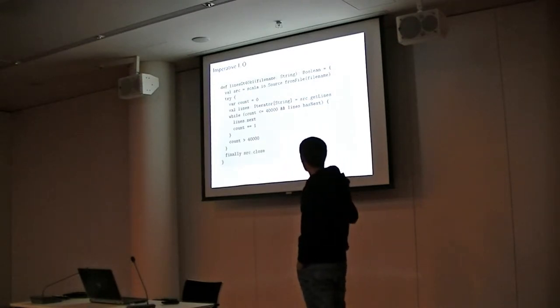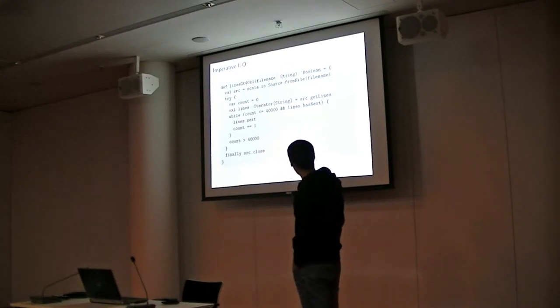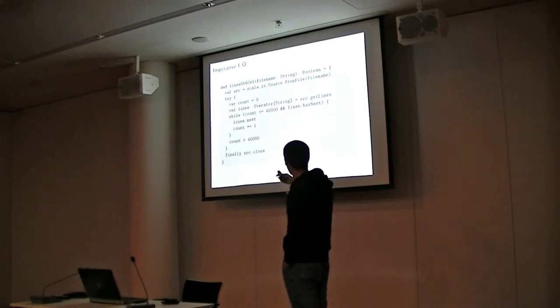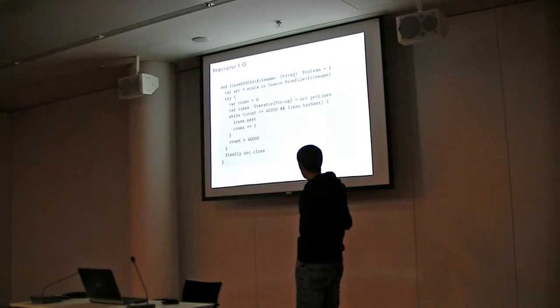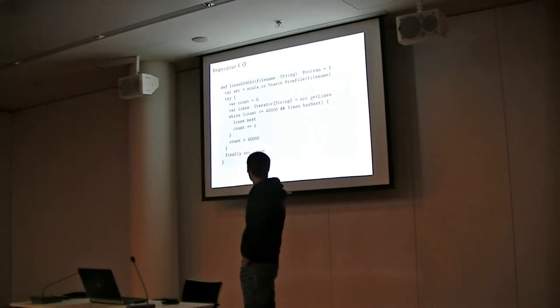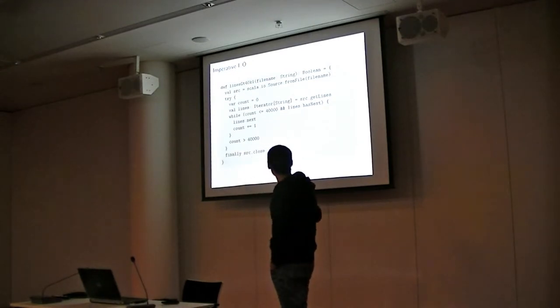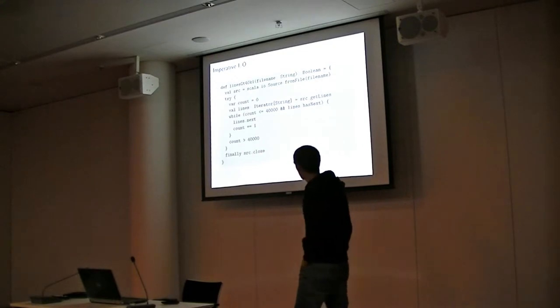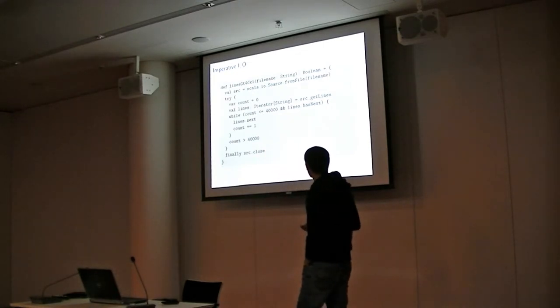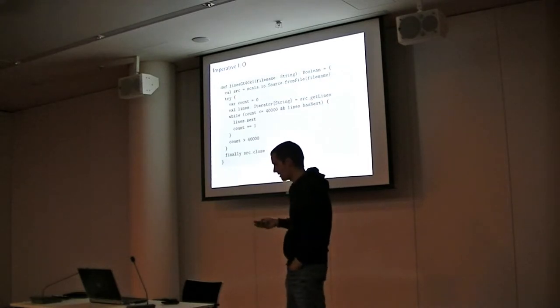lines greater than 40,000, which checks if the file has more than 40,000 lines. What this does is open the file and it has a counter. Then it iterates from the open file, which iterates on all lines in this file. Then we have a loop where we increment the counter. Finally we check if our counter is greater than 40,000, and then we close our resources.